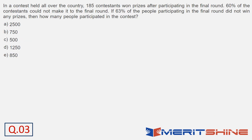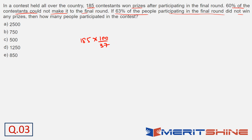Question number 3. What's given: 185 contestants won prizes after reaching the final round. It says 63% of the people participating in the final round did not win. So how many win? 37%. So people reaching the final round are 185 into 100 by 37. It also says 60% of the contestants could not make it to the final round, so 40% made it — that is 2 by 5. So we write 5 by 2. This gives 2500 by 2, which is 1250. That is option D.